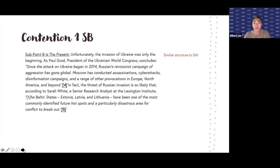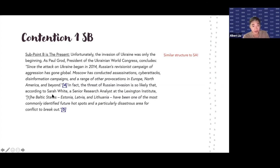Subpoint B is very similar — he still has two pieces of evidence. Just make sure that you notice he also has Paul Grodd, President of the Ukrainian World Congress, and Sarah White, a Senior Research Analyst at Lexington Institute. Make sure you're including everything inside of the citation itself because your judge wants to know that your sources are credible.